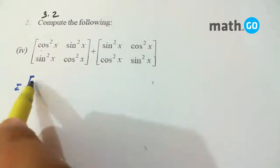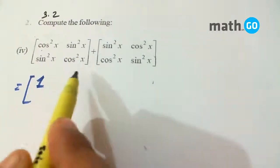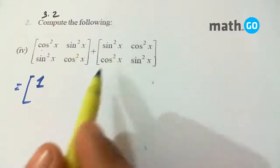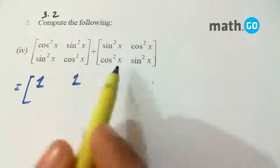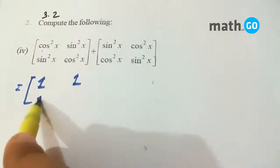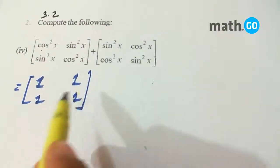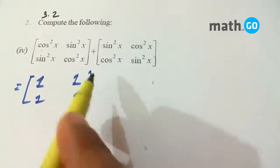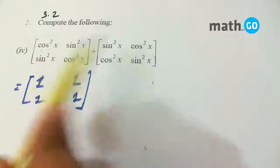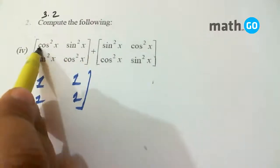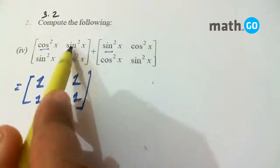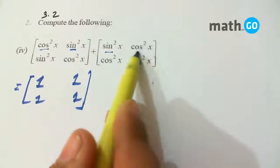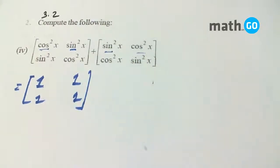For example, cos²x + sin²x equals 1, and sin²x + cos²x equals 1 again. Similarly, the corresponding elements a₁₁ are added, and this is the answer.